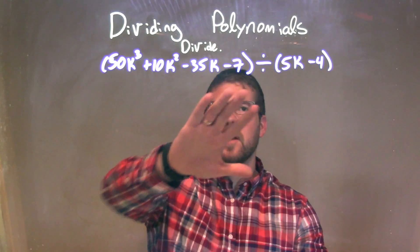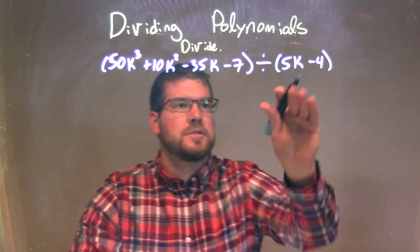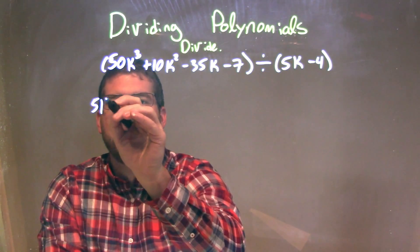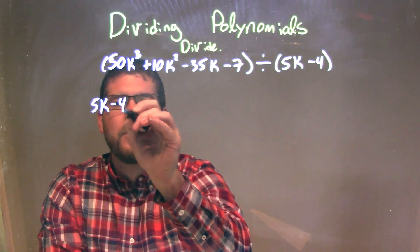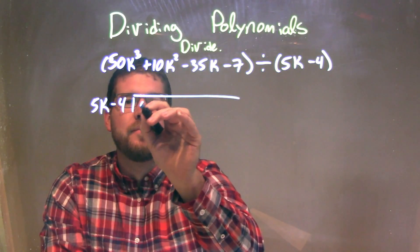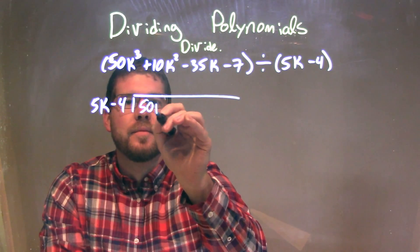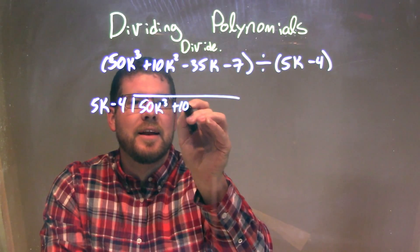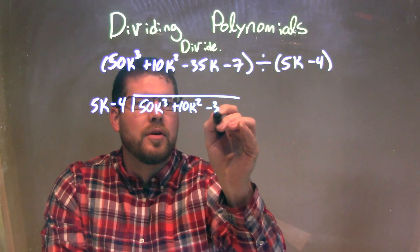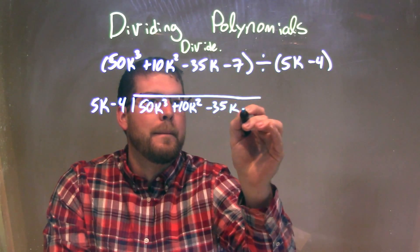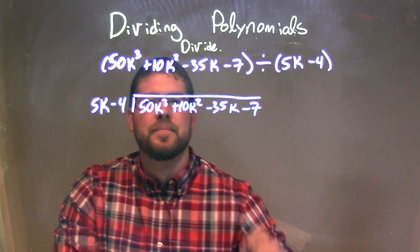I'm going to rewrite this as long division. So I take my divisor, my 5k minus 4, and that's going to go into my dividend: 50k³ plus 10k² minus 35k minus 7.